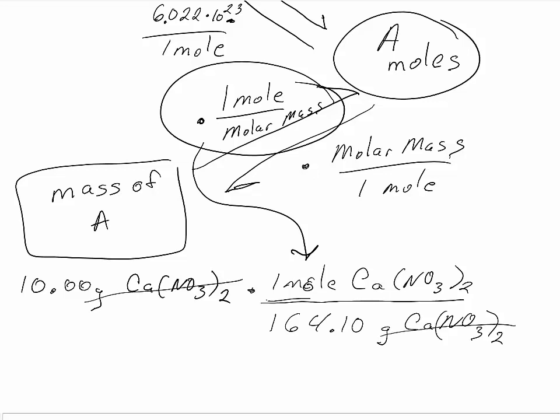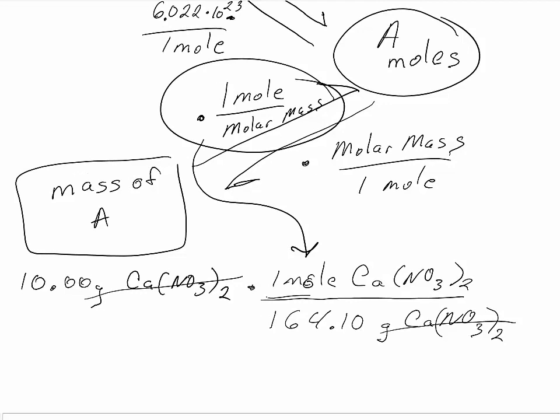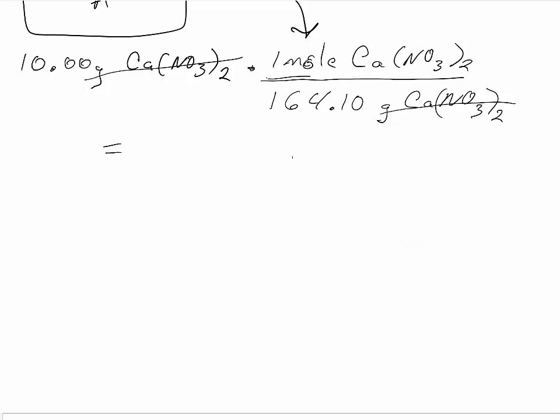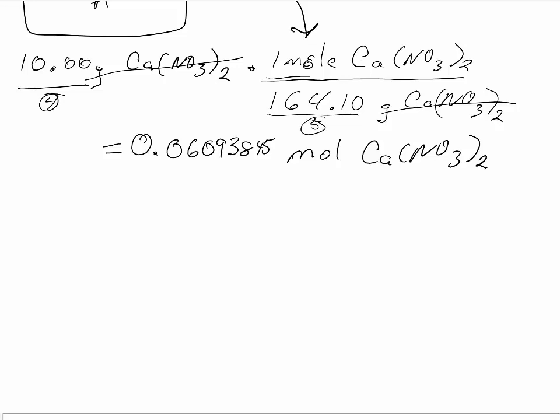My grams of calcium nitrate will cancel out, so my answer here will be moles of calcium nitrate, which is 0.06093845, etc. Now the question comes about significant figures. We have 4 significant figures in our mass of calcium nitrate. We have 5 significant figures in our molar mass of calcium nitrate, so 4 significant figures is appropriate. Remember, when there's a decimal, we start counting in the beginning at the first non-zero digit, which is the 6, and we count everything after that. So the fourth significant figure is where that 3 is, which would be rounded. So we have 0.06094 moles of calcium nitrate.